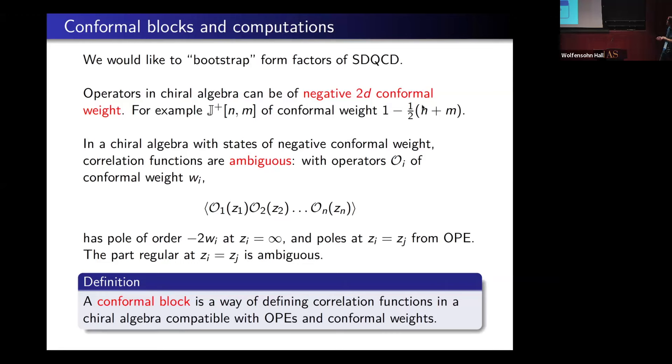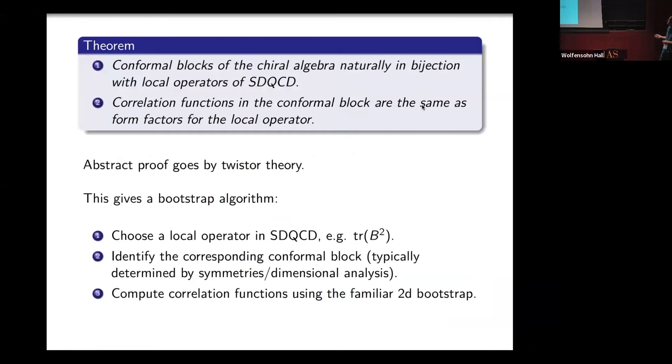There's lots of ambiguity in defining the correlation functions. There's a vector space of ways of defining correlation functions. In the math literature, this vector space is called the space of conformal blocks. A conformal block is a way of giving correlation functions compatible with the conformal weights and the OPEs. The next result is that these are the same as local operators of the self-dual theory. If you give me a local operator in self-dual QCD, then you can build a way of defining correlation functions. Further, correlation functions in that conformal block are the same as form factors.